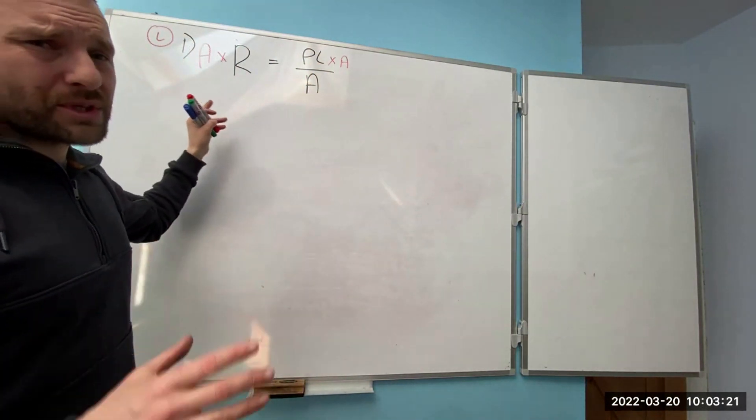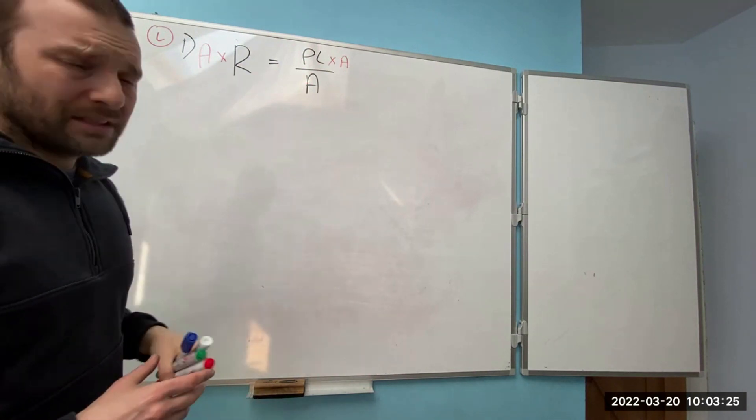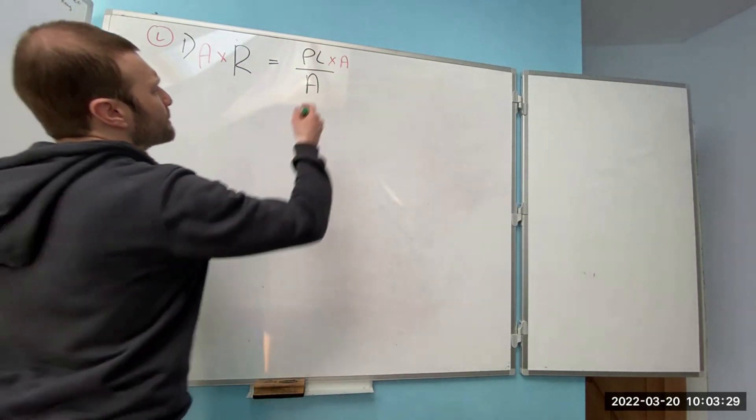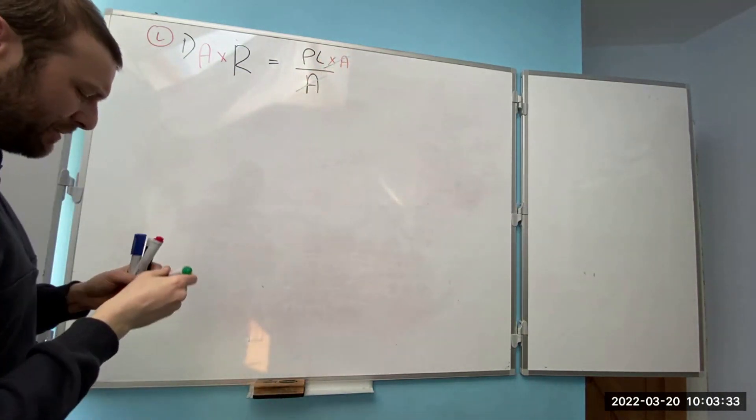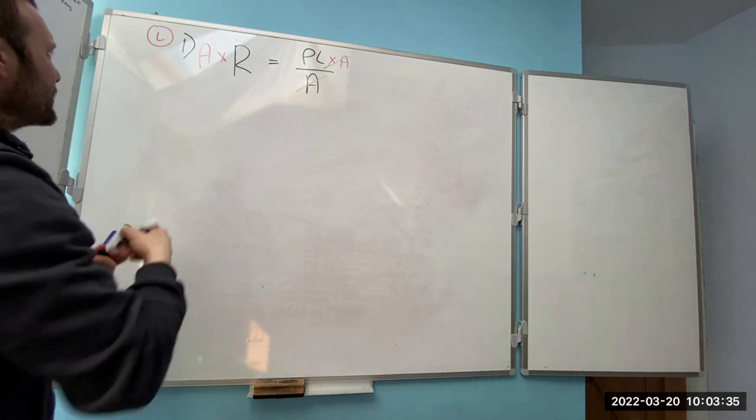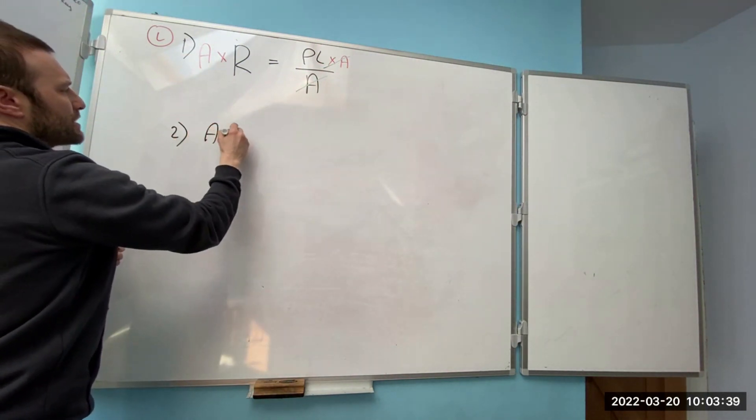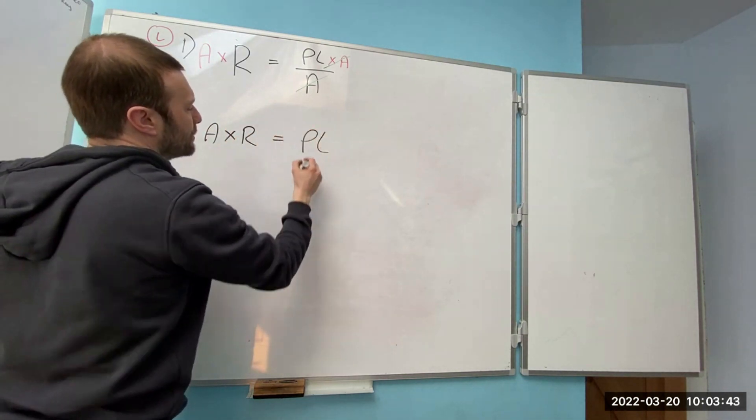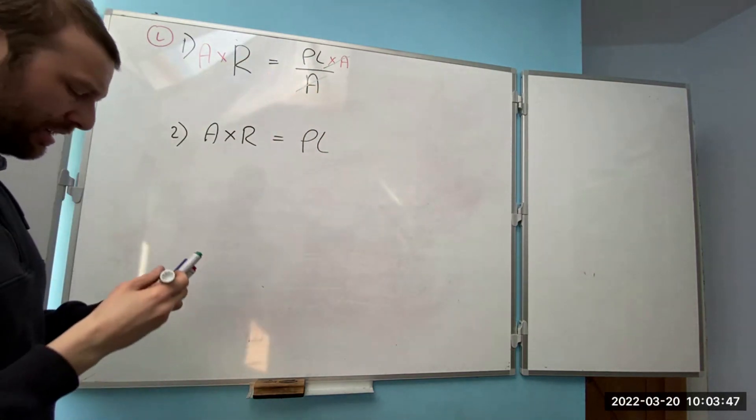You should also know at this point that that is balanced. However I need to clean it up. So times A divided by A nothing happens. So now we're here to A times R equals ρL. I don't need to do anything else because times A divided by A cancels that out.